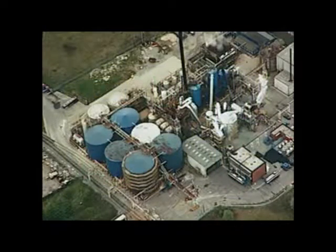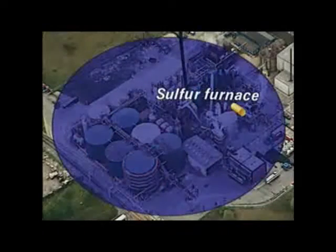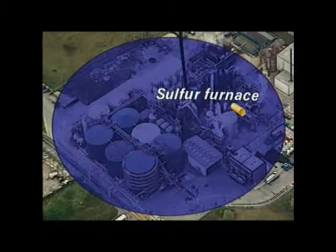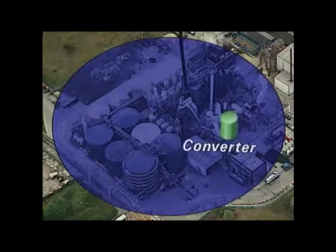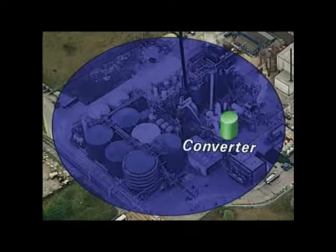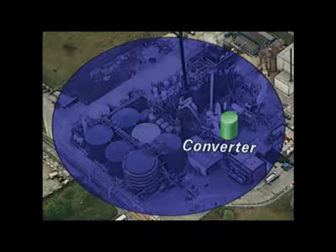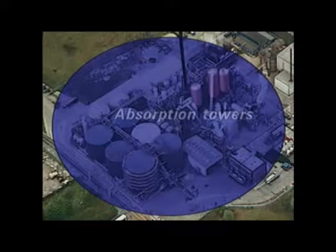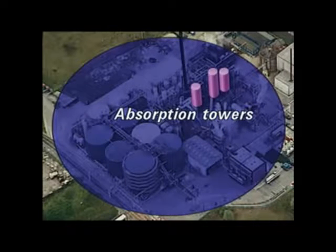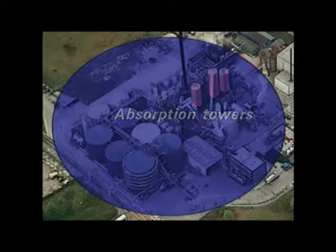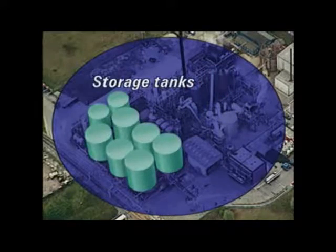At this small plant that makes 600 tonnes of acid per day, the sulphur is burnt in a furnace. Sulphur dioxide passes to the converter. Sulphur trioxide is fed to the absorption towers to produce acid of the required concentration, which is then stored for delivery by tanker.